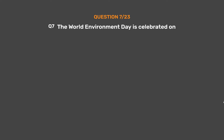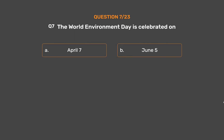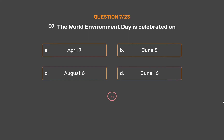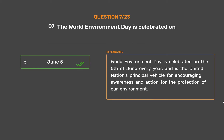Question No. 7. The World Environment Day is celebrated on: Option A, April 7th; Option B, June 5th; Option C, August 6th; Option D, June 16th. World Environment Day is celebrated on the 5th of June every year and is the United Nations' principal vehicle for encouraging awareness and action for the protection of our environment.